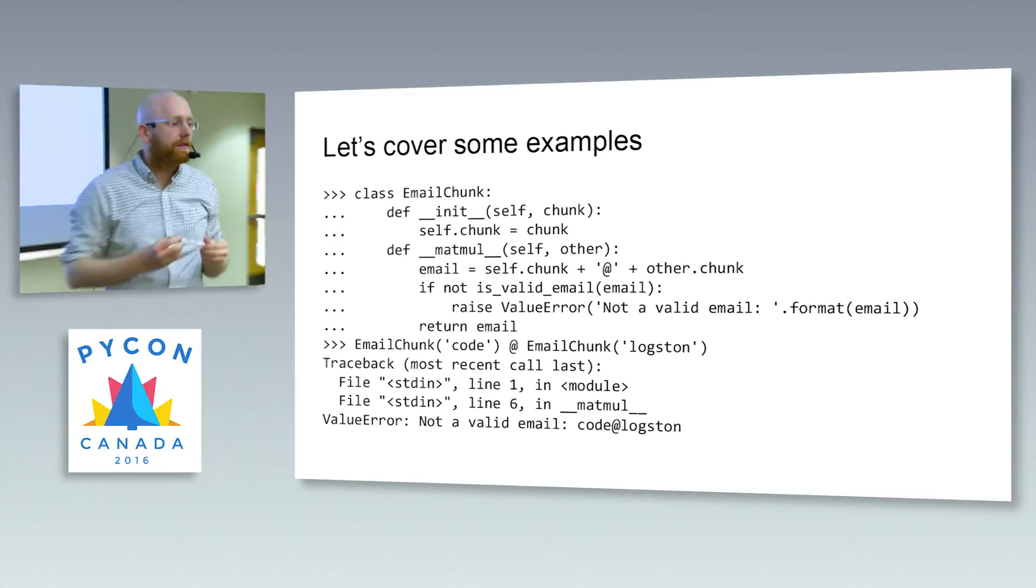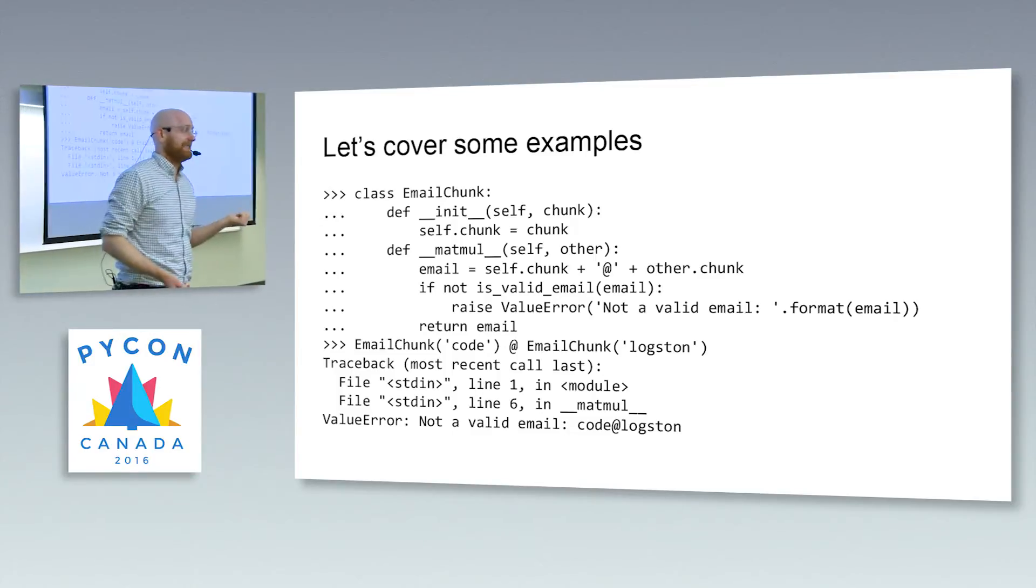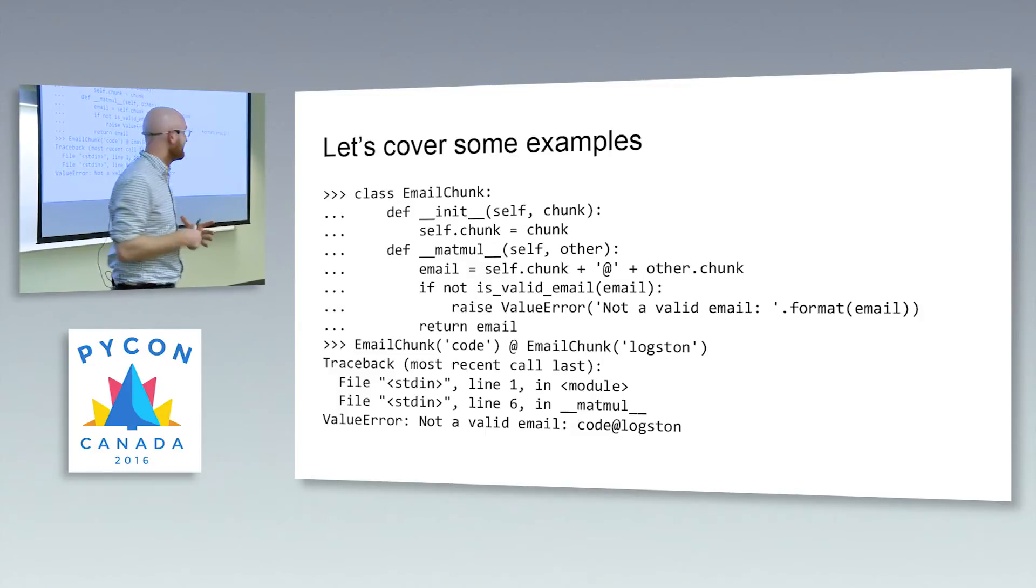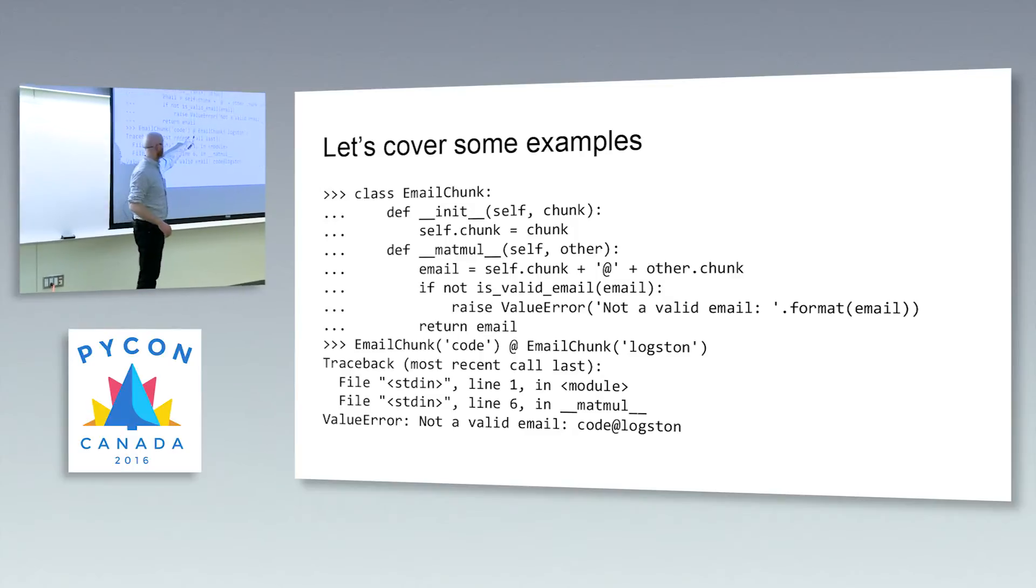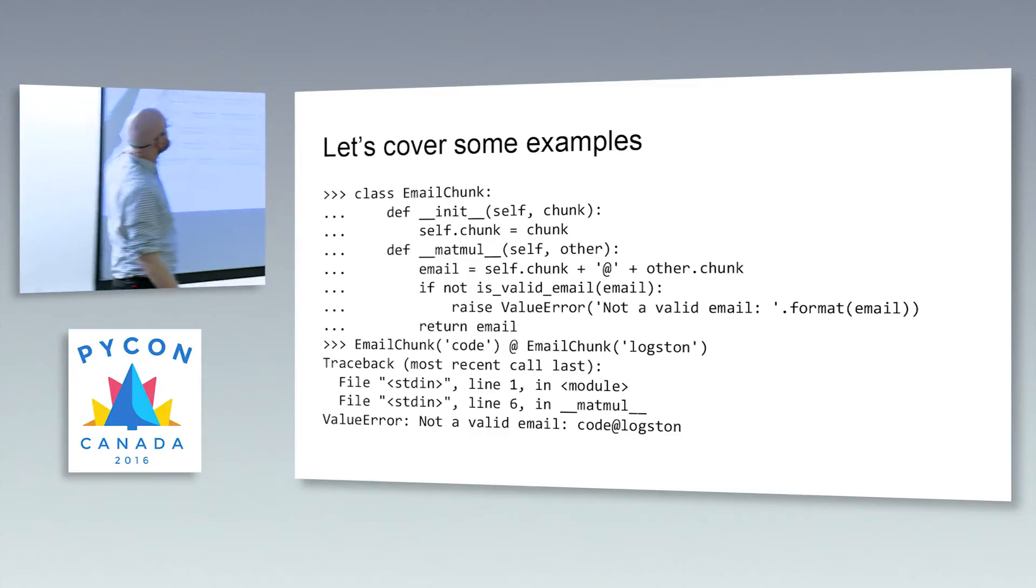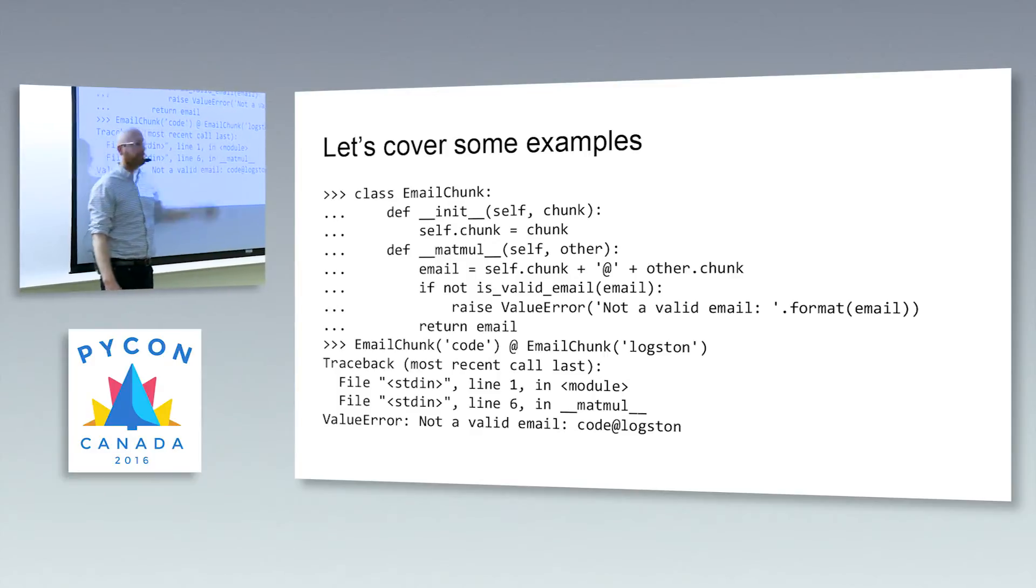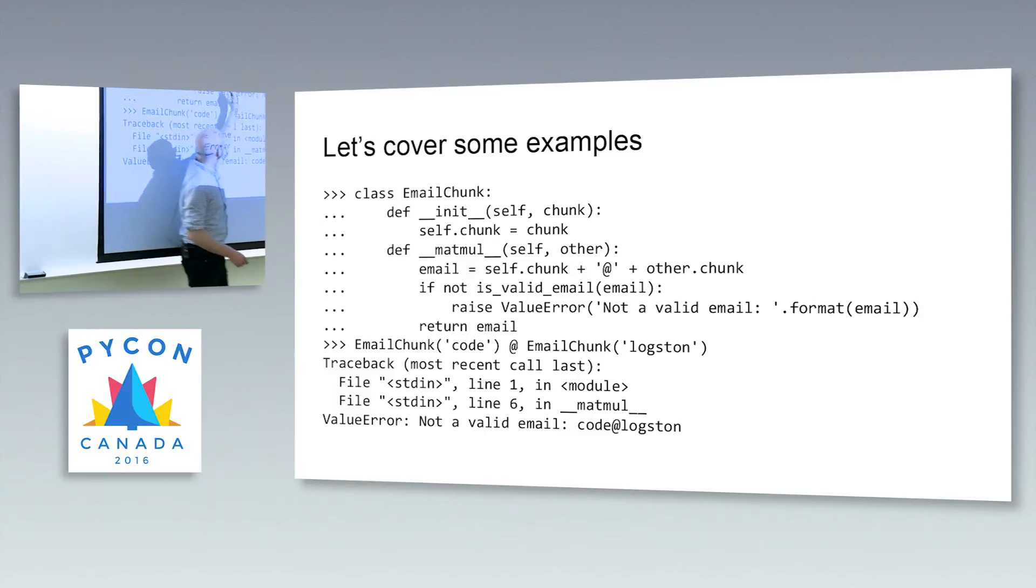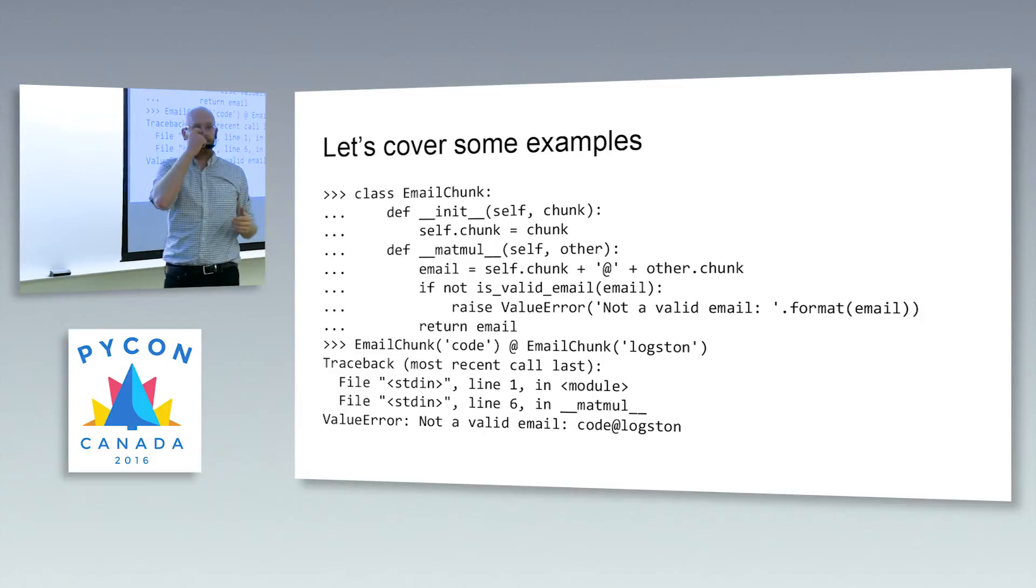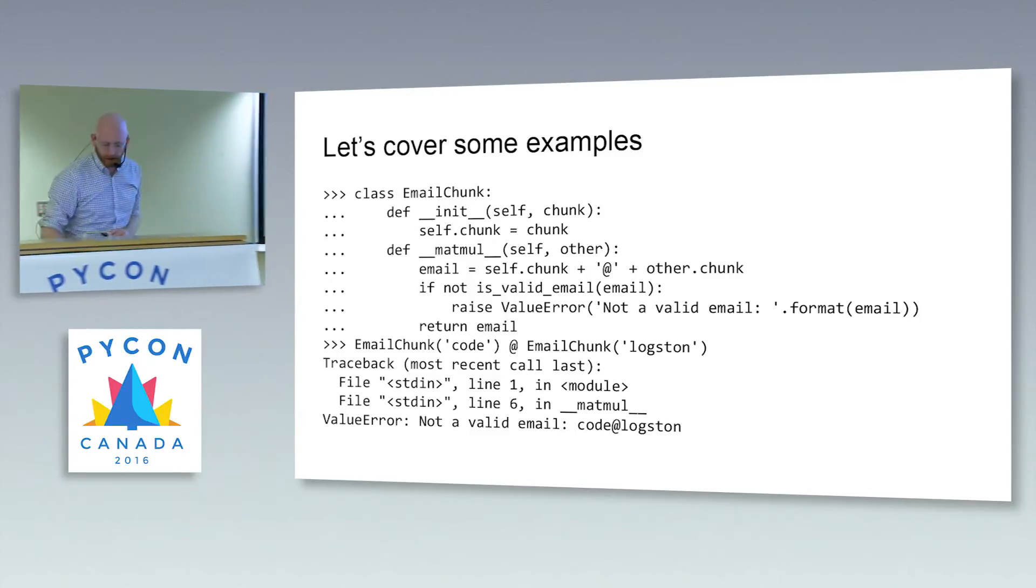And to define that, we'll use the matrix multiplication dunder method or matmul method. The major thing that this operator was introduced for was for matrix multiplication. However, it's an at symbol, right? So I was thinking, well, what else can you do with an at symbol that's maybe a little bit more at symbol-y? And email addresses are made up with at symbols. So maybe we can make up an email chunk class that takes a chunk and does some verification when you matmul it with another chunk to see if it's a valid email address. Now, do I think this is good code? Nah. But it goes to show that we really have a lot of flexibility over what our operators do in Python.